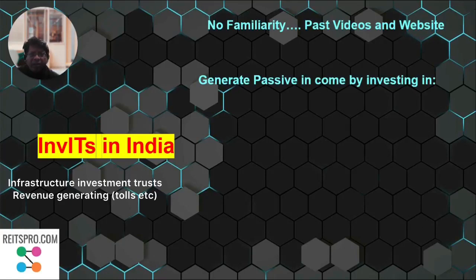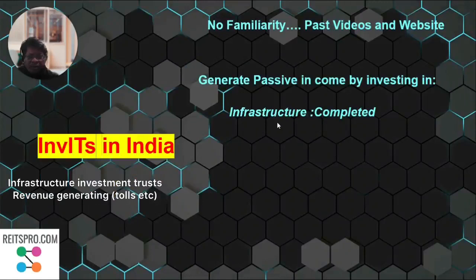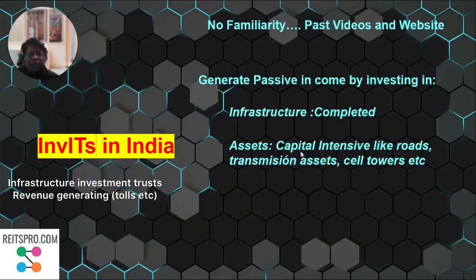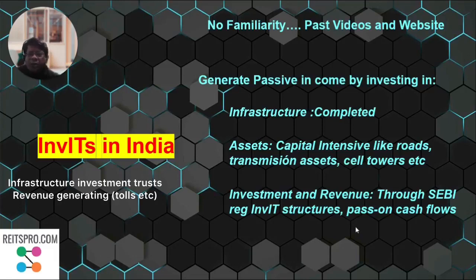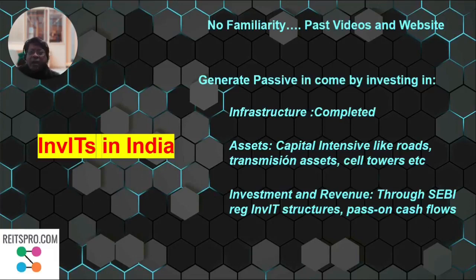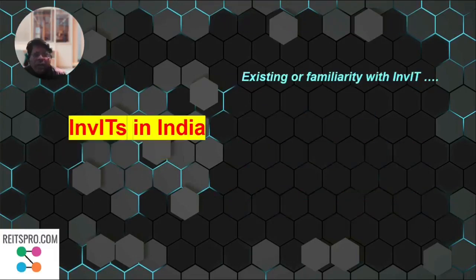This infrastructure has to be basically completed infrastructure. The assets could be something like roads, transmission assets like power transmission assets, or cell towers. The investment is made through semi-regulated investment structures called InvITs, which are Infrastructure Investment Trusts. They also pass on the cash flows to unit holders, just like dividend companies pass on the dividend.